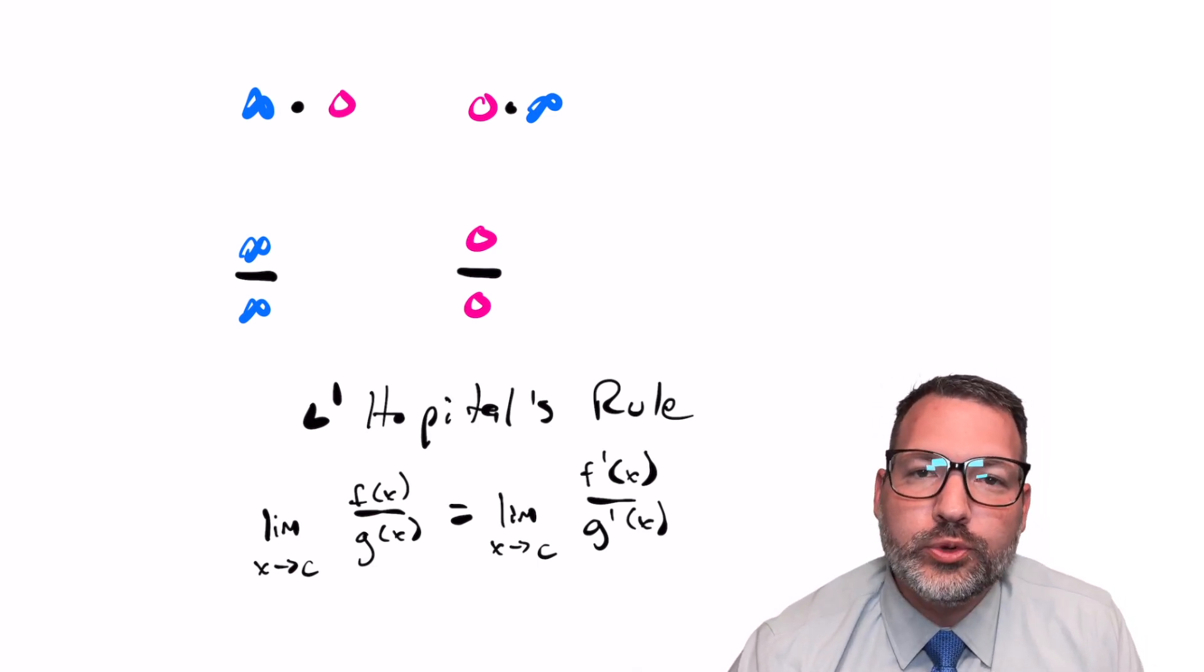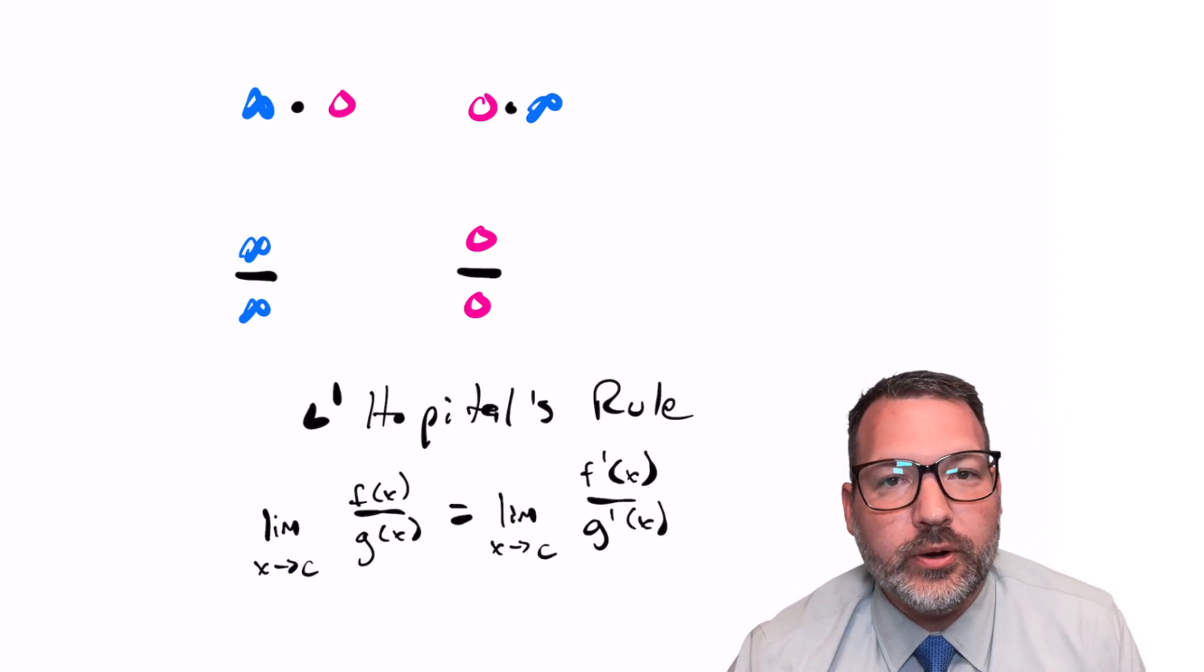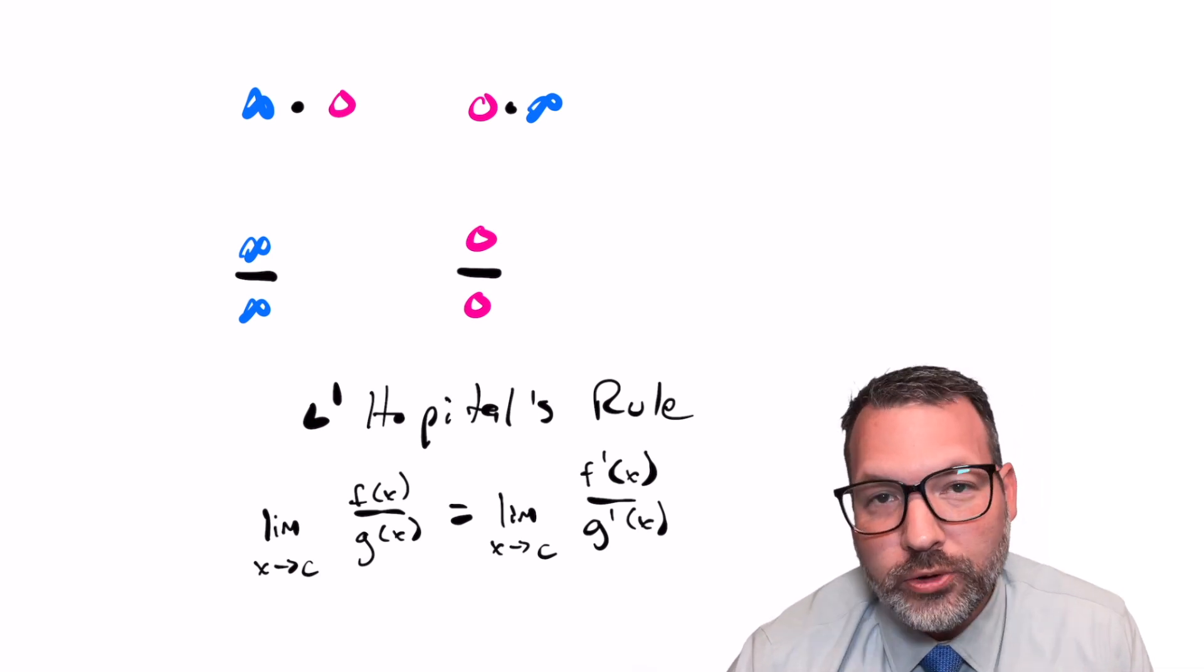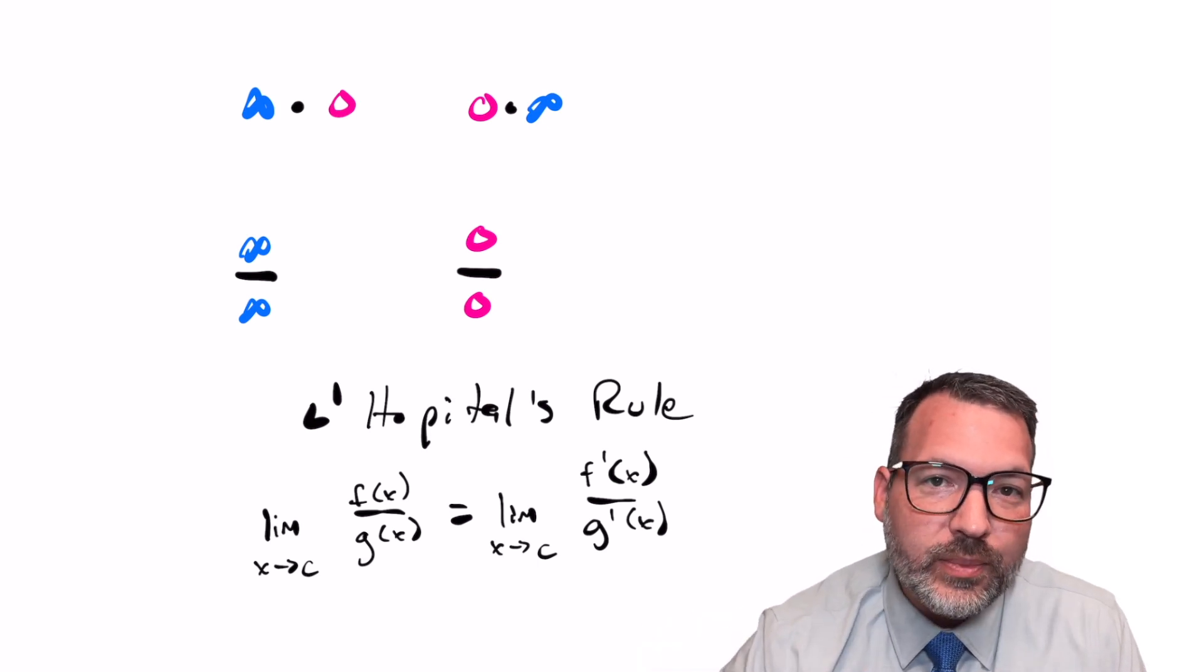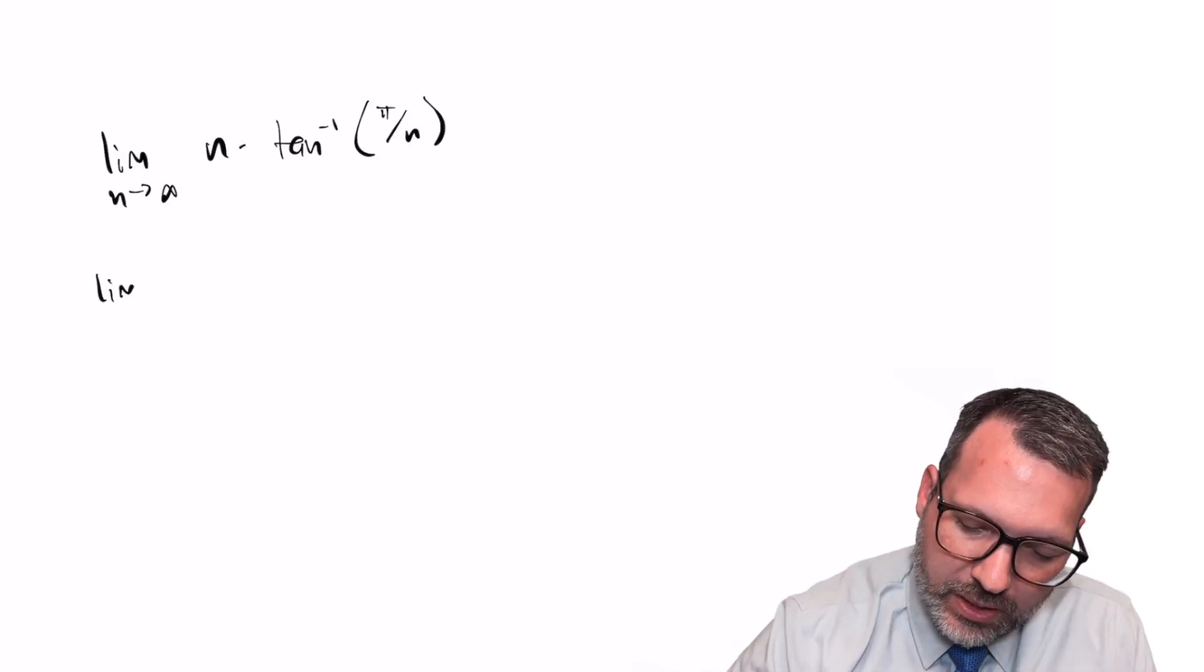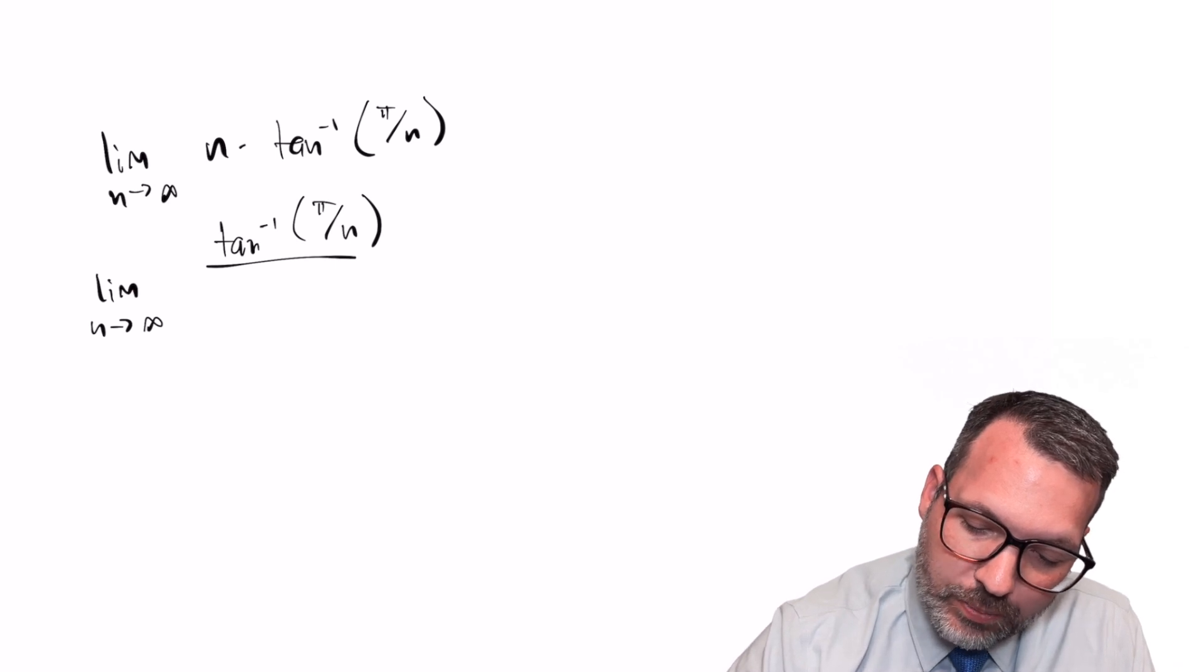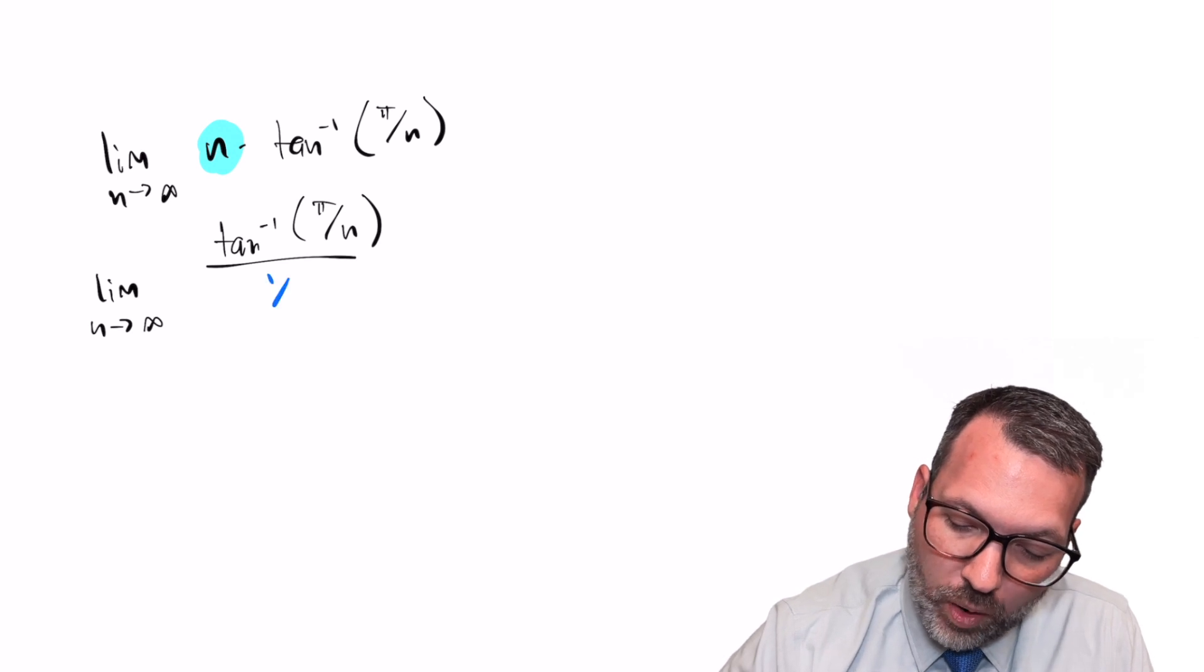L'Hopital's rule is this particular rule for limits that helps us deal with indeterminate forms. If we have zero times infinity, infinity times zero, infinity divided by infinity, or zero divided by zero, we can use L'Hopital's rule to evaluate that limit, provided we can state the original function as actually the quotient of two functions, and provided that those functions are well-behaved in some sense. The first step is that we're going to take this limit, and we're going to restate it as a quotient. We'll keep the inverse tangent part in the numerator of the limit, but then this n portion here, we're going to turn into division by its reciprocal. That is, we're going to divide by 1 over n.